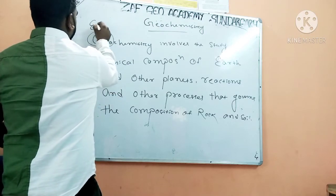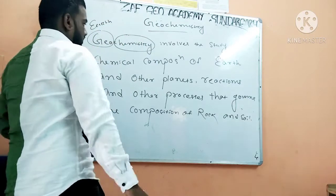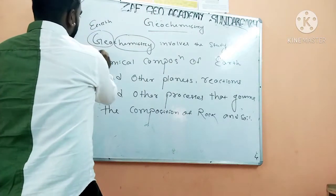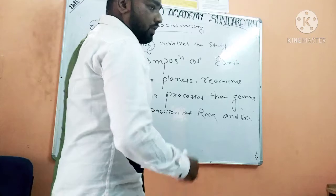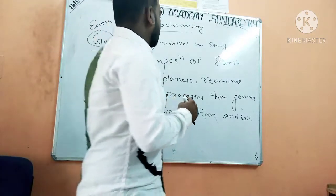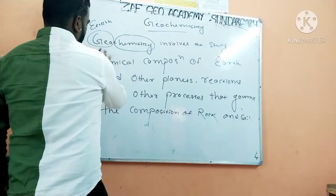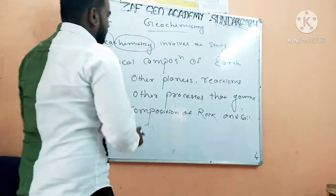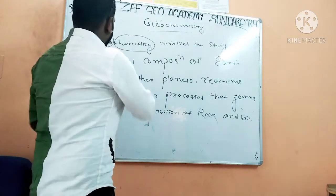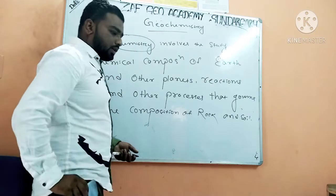What is geochemistry? Geo means earth and chemistry means the reactions, the chemical processes involved. Geochemistry decides what will be the composition of any planet — and by planet we mean the rocks. Here we are studying geology, so we will only talk about rocks, because the planets are made up of rocks, and geochemistry will decide what will be the composition of any planet or any rock.